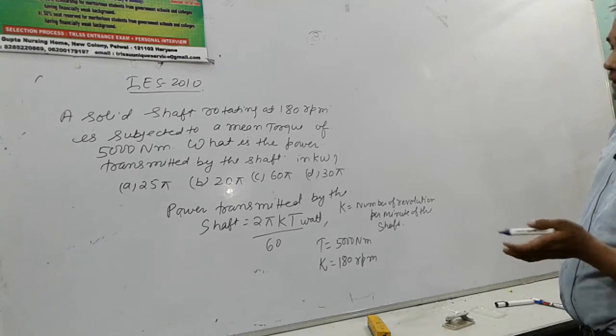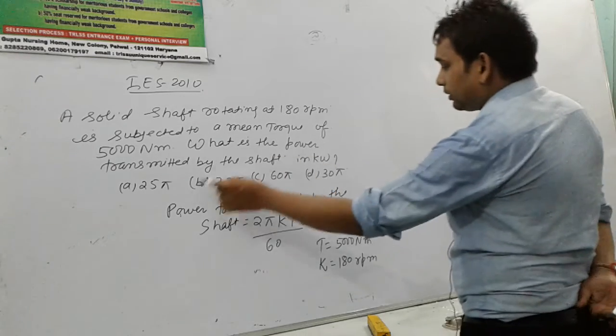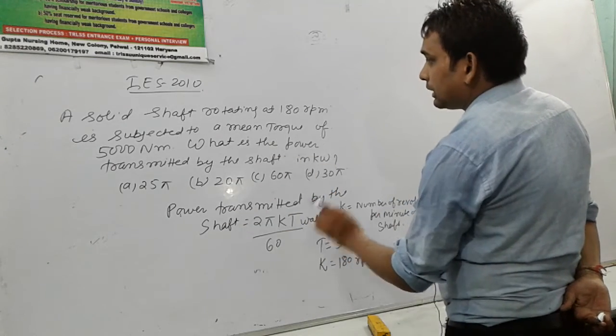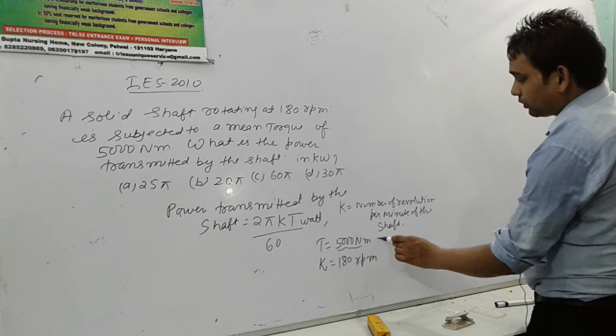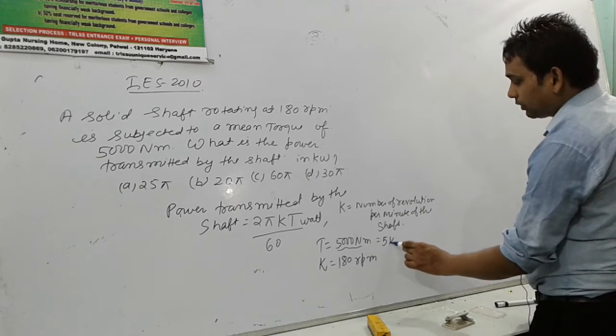One thing we have to understand. In this formula, the T is in kilonewton meter. We have to convert the T in kilonewton first. So we will write it as 5 kilonewton meter.